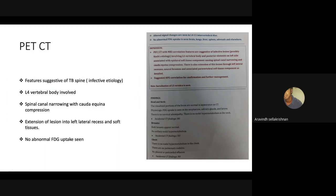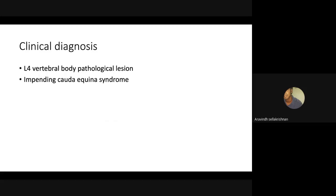Our initial diagnosis was some pathological lesion in the L4 vertebra, and TB was not initially in our differential. We did a PET-CT, which suggested features of infective etiology, with extension into the left sacral lateral recess and soft tissues causing spinal cord compression and features of cauda equina syndrome. With the initial diagnosis of L4 vertebral body pathological lesion and impending cauda equina syndrome, we proceeded with surgery.